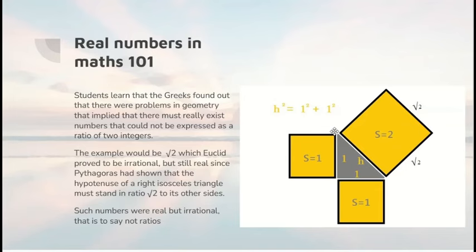Well, by Pythagoras' theorem, the area on the hypotenuse is 2. Therefore, the length of the hypotenuse has to be root 2. So root 2 must be a real number, must really exist. But Euclid was able to demonstrate that it was an irrational number. No ratio of two numbers could lead to it. So there were numbers that were real but irrational.